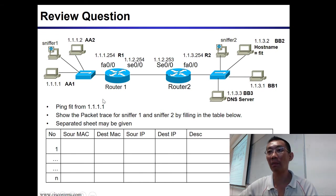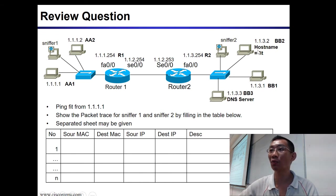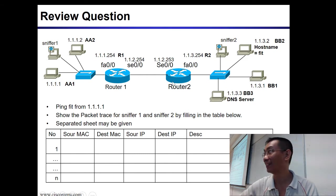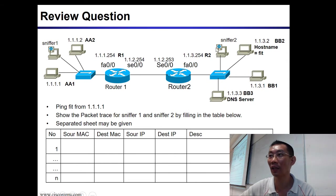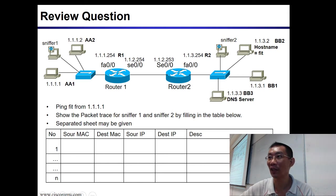Normally in past year exam questions, this is what was given, and normally only 20% of students get it all right despite many practices. There is a sniffer one and a sniffer two. This PC pings FIT — so what do you see in sniffer one and what do you see in sniffer two? One line, one mark — or one line, half mark. If there are eight lines, the question is four marks.